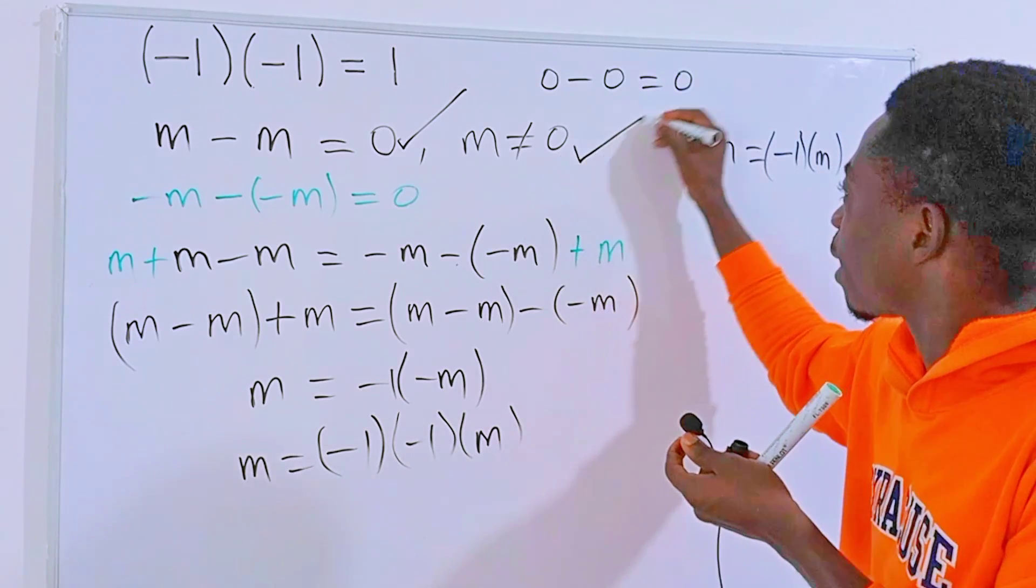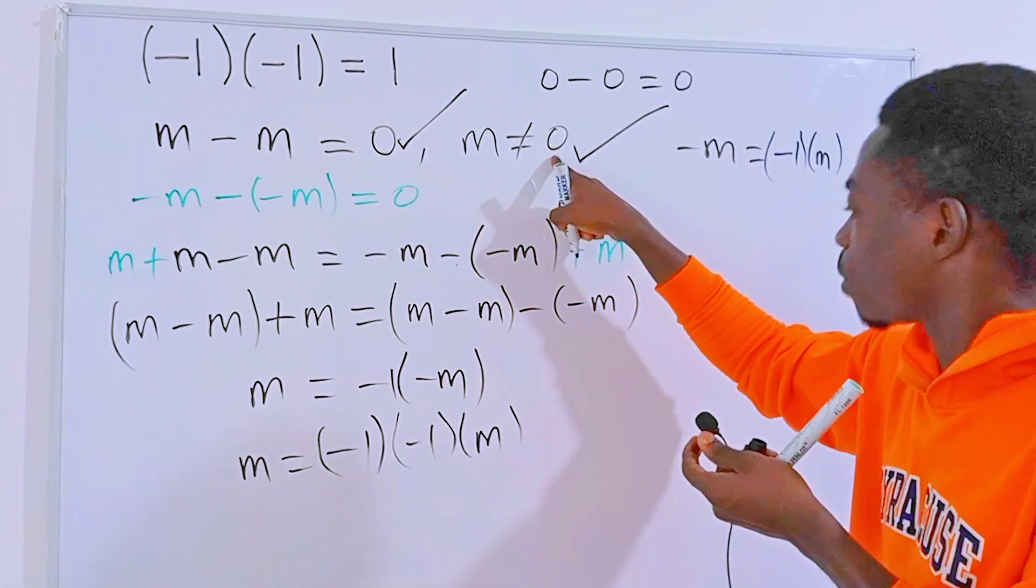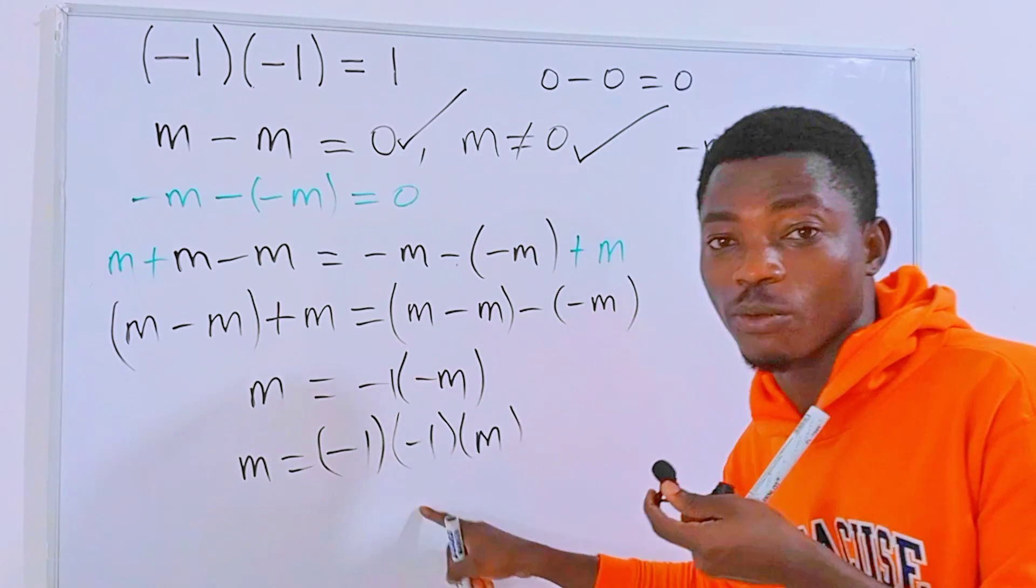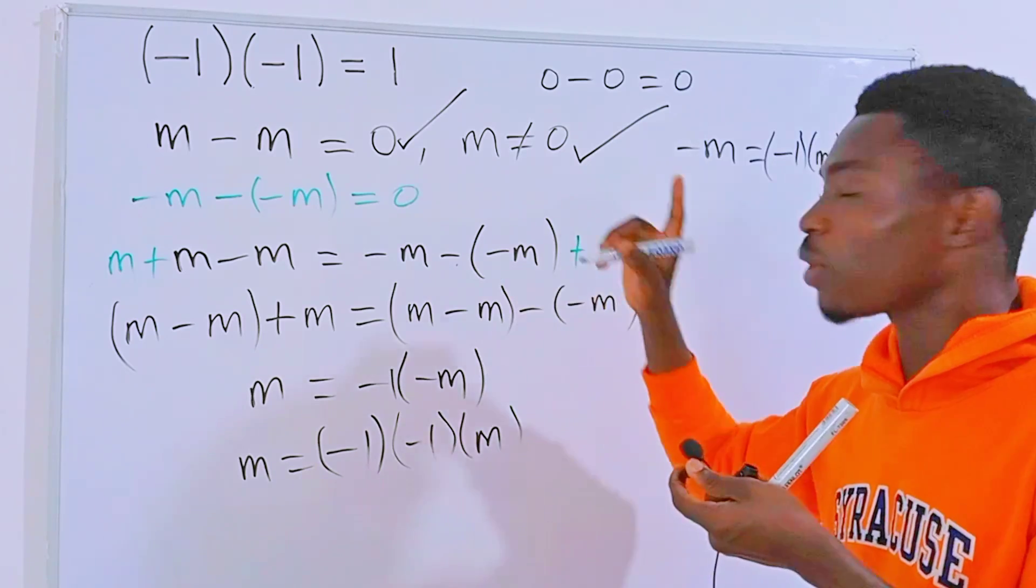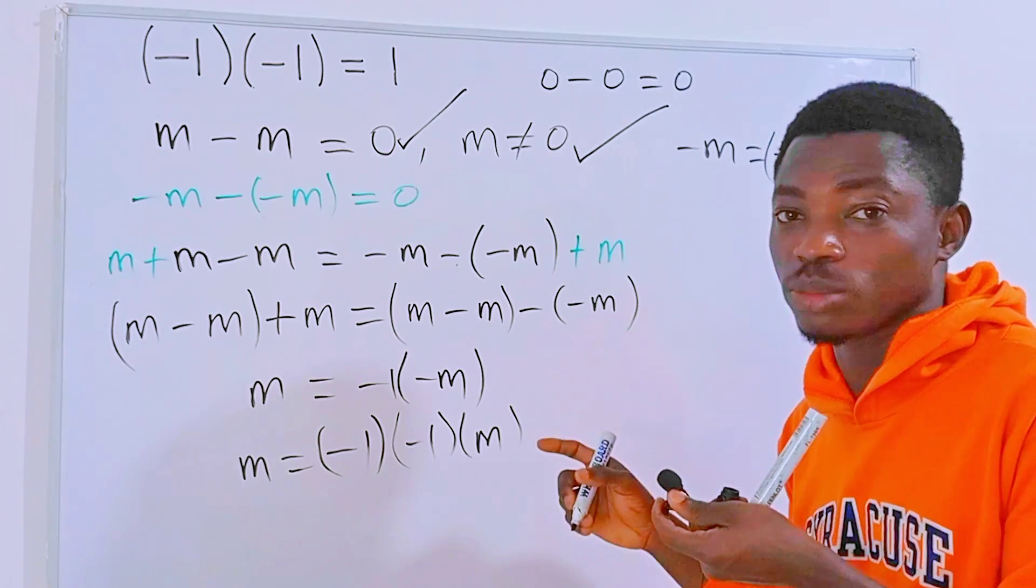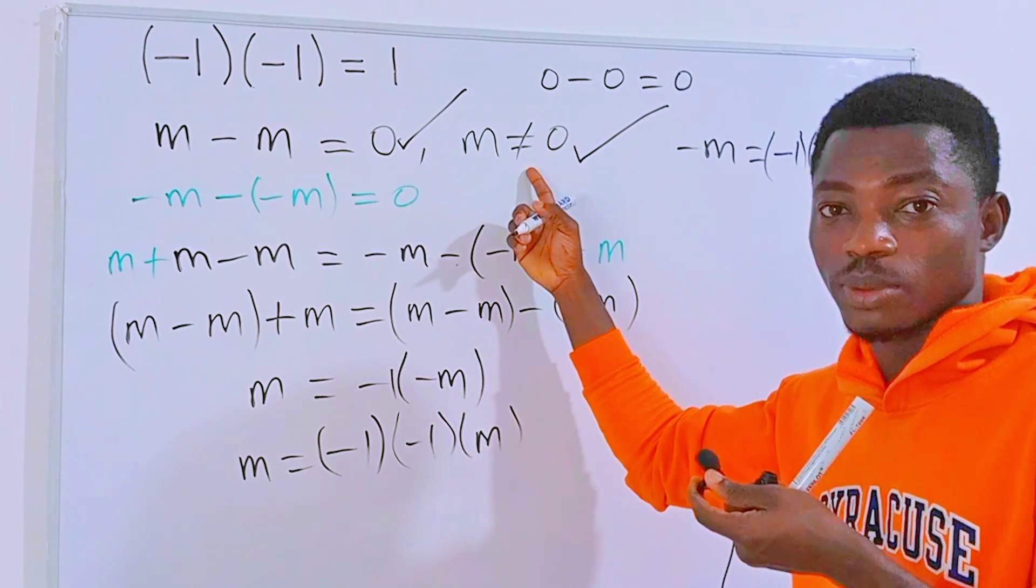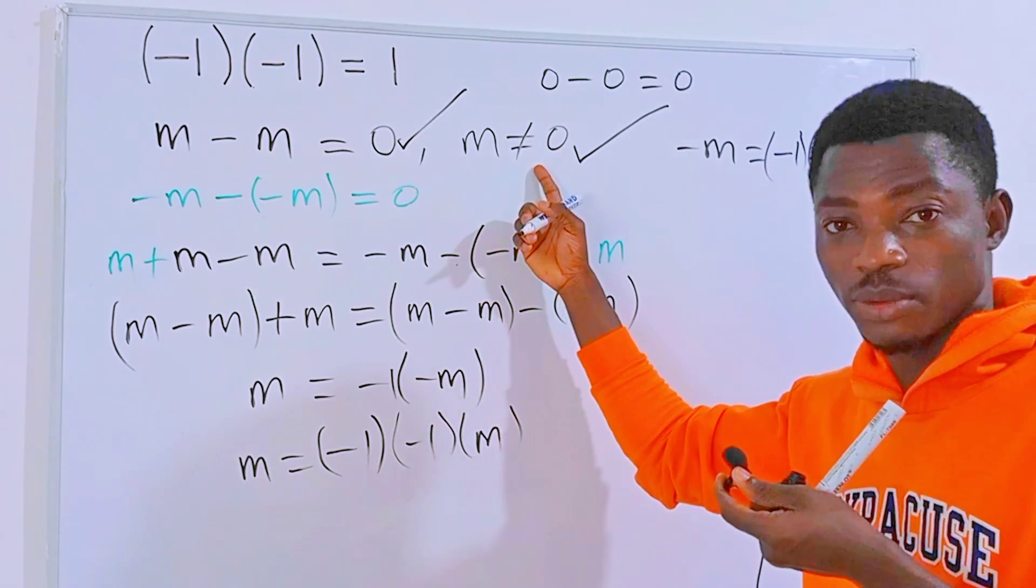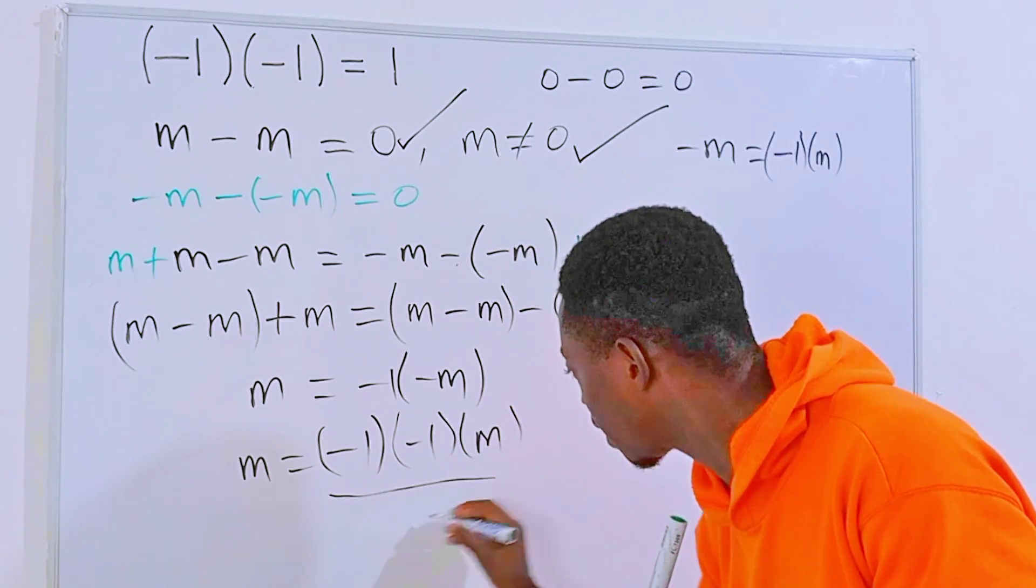Because of this condition over here, m is not equal to zero, we can divide each side of this equation by m. If not, this dividing each side by m wouldn't be possible because we can assume that m is equal to zero. But here we are saying m is not zero, so we can divide each side of this equation by m.